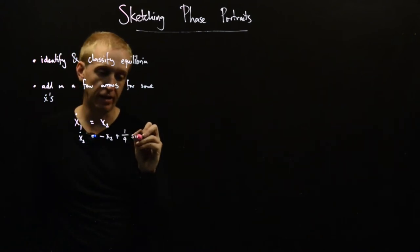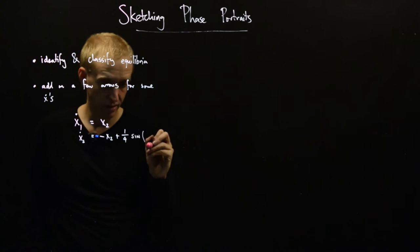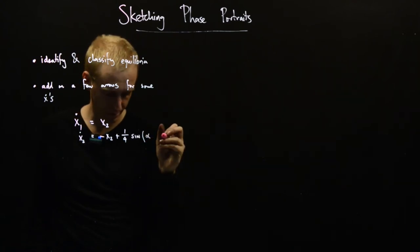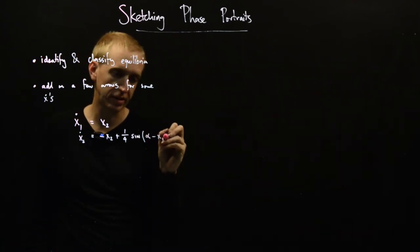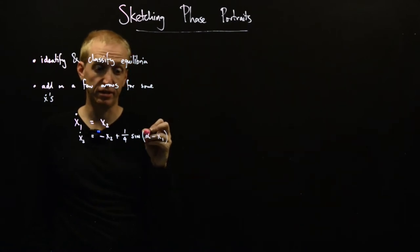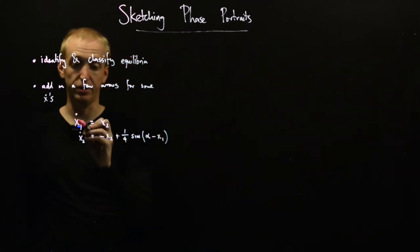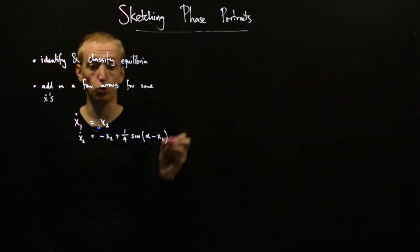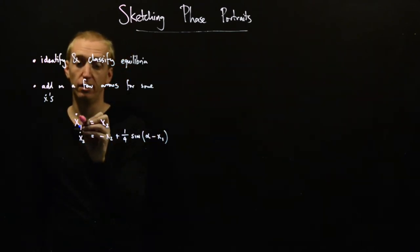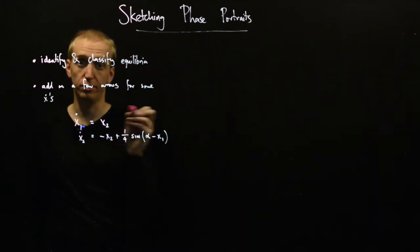And then here we have a sine nonlinearity. We have some alpha, and then we have minus x1. So alpha here is a parameter, and then our states are x1 and x2. So this is already in our standard form of x dot is equal to function of x.